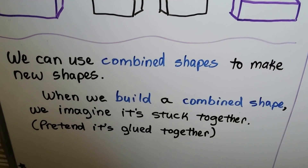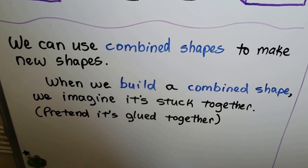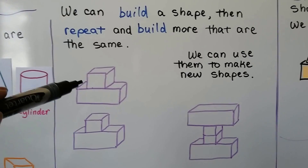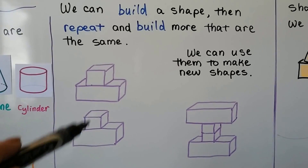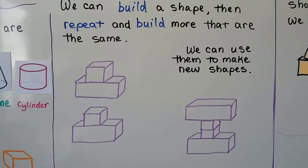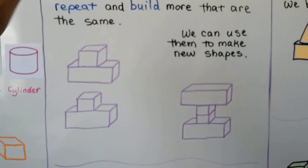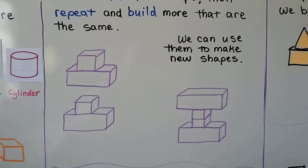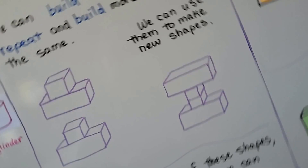We can use combined shapes to make new shapes. When we build a combined shape, we imagine it stuck together — we're going to pretend they're glued together, so we can't take them apart once we build them. We can build a shape, then repeat and build more that are the same. If I built one and made another, I could take one and turn it upside down on top of the other. It kind of looks like a capital letter I, doesn't it? If we turn it sideways, it would look like an H.